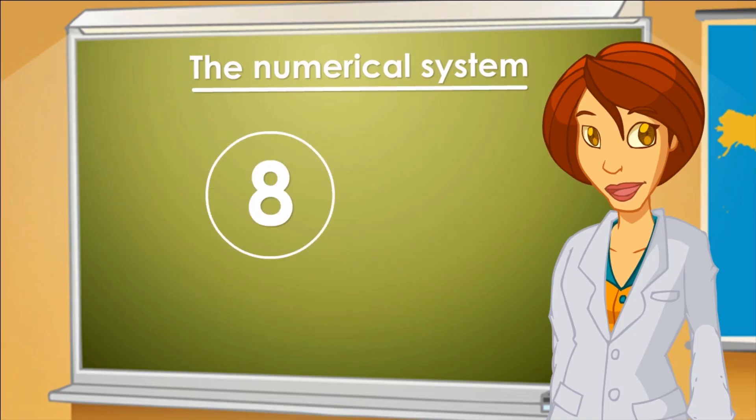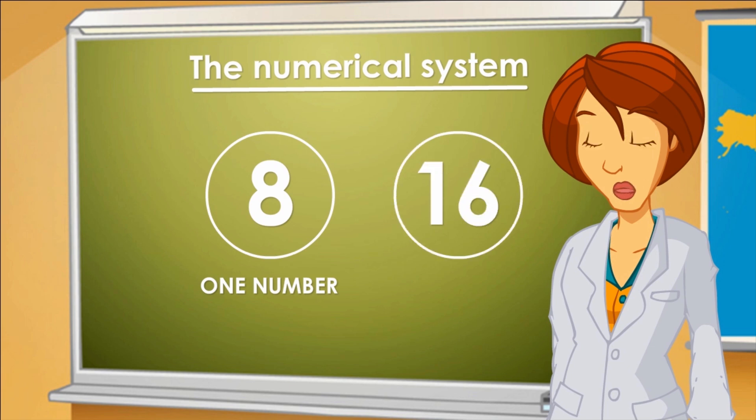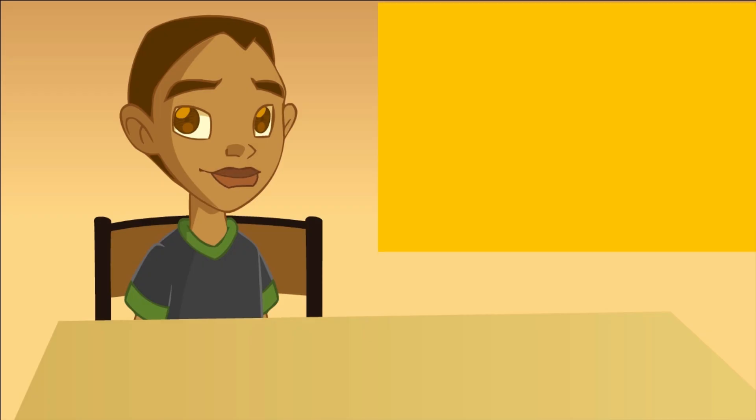Some have only got one number, that is, only one figure, and others have two numbers, or two figures. Numbers with one figure go from zero to nine. If we add another number in front of those numbers, we get larger numbers.